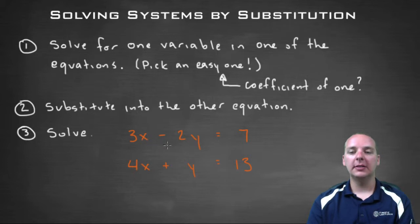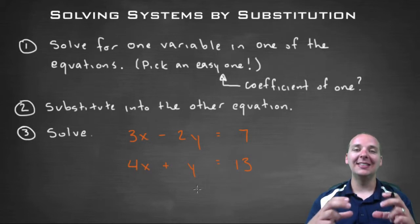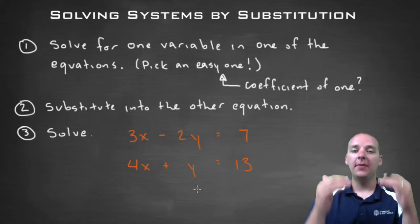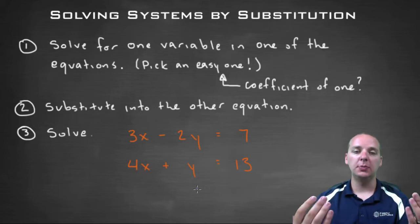For example, let's say you had 3x - 2y = 7 and 4x + y = 13. Together that makes a system of equations, and we're trying to find an ordered pair (x, y) that makes both equations be true.